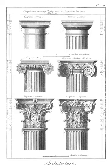Orthostyle: Greek — orthos (straight) and stylos (a column) — a range of columns placed in a straight row, as for instance those of the portico or flanks of a classic temple.